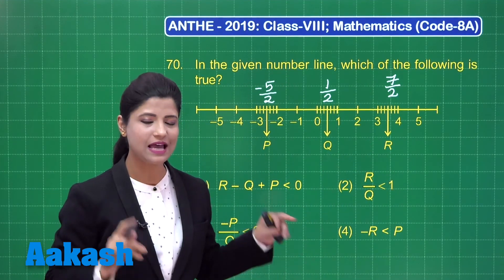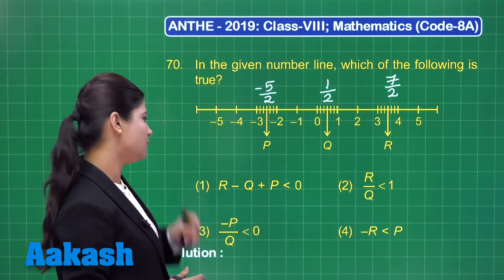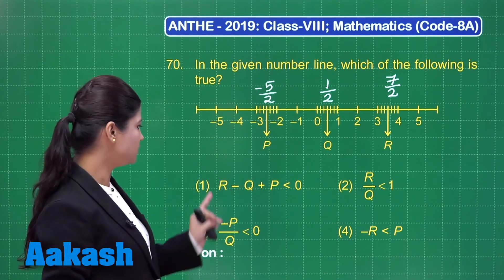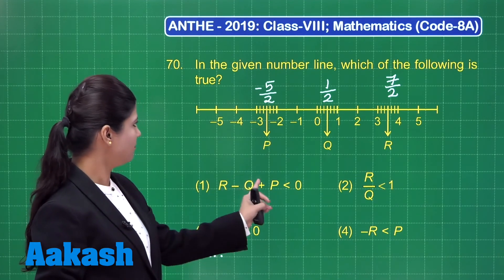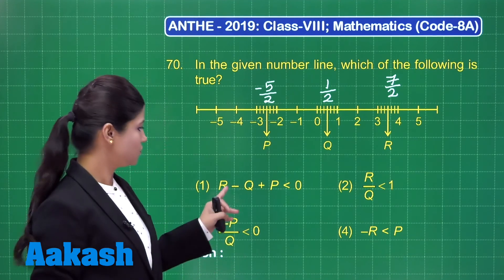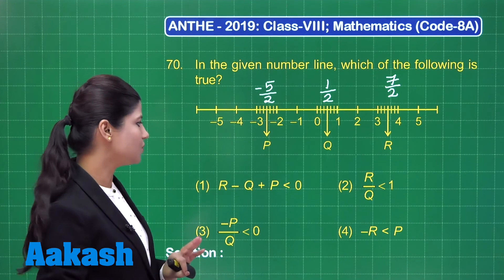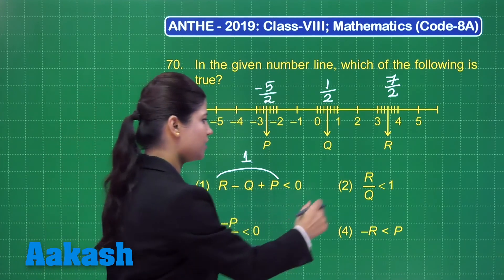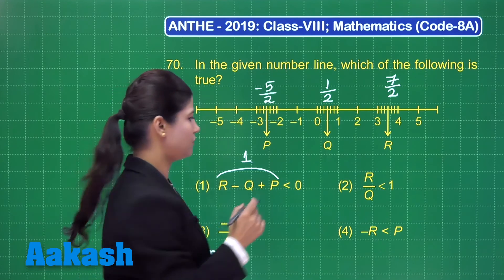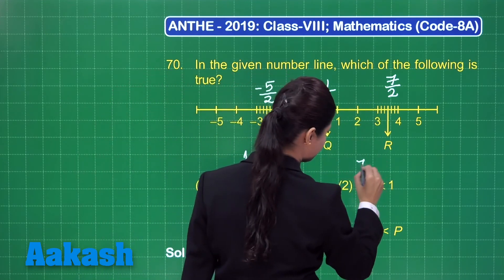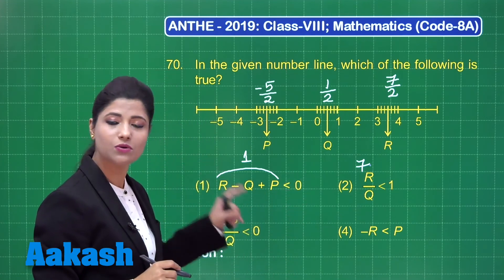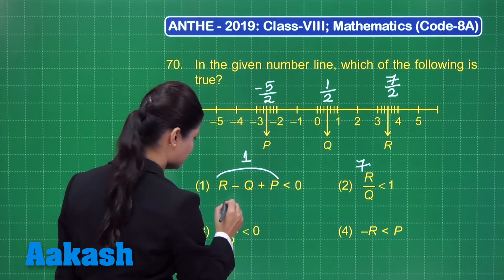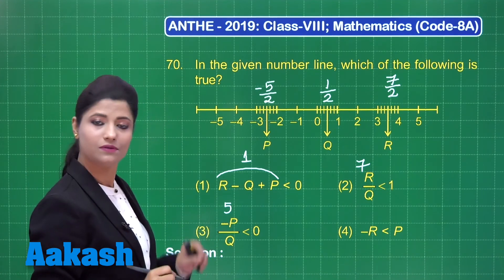We need to check each of the 4 options. For option 1, R minus Q plus P: taking 7 by 2 minus 1 by 2 minus 5 by 2, this simplifies to 1 by 2, which is not less than 0, so option 1 is incorrect. For option 2, R upon Q: 7 upon 2 divided by 1 by 2 equals 7, and 7 is not less than 1, so option 2 is incorrect. For option 3, minus P upon Q: minus P is 5 by 2, divided by 1 by 2 equals 5, which is not less than 0, so option 3 is also incorrect.